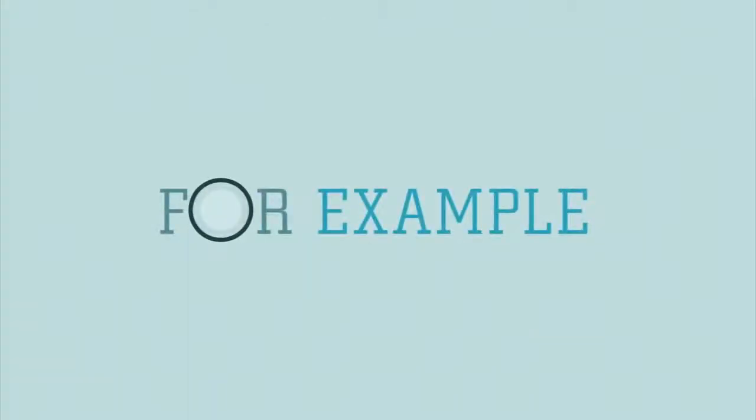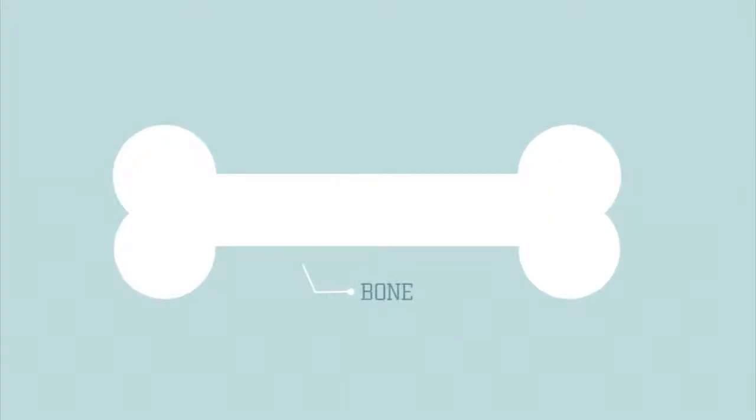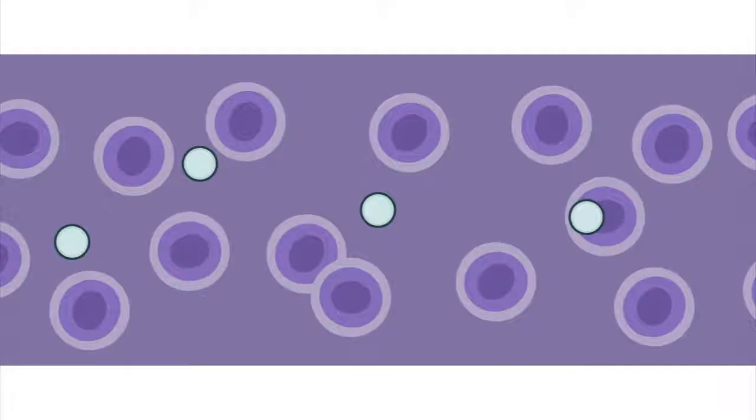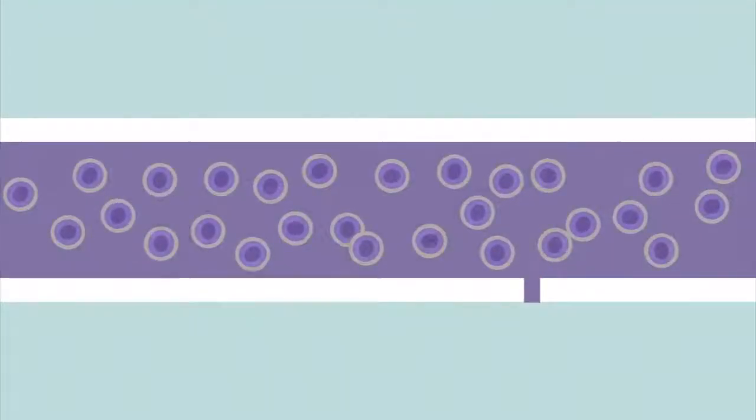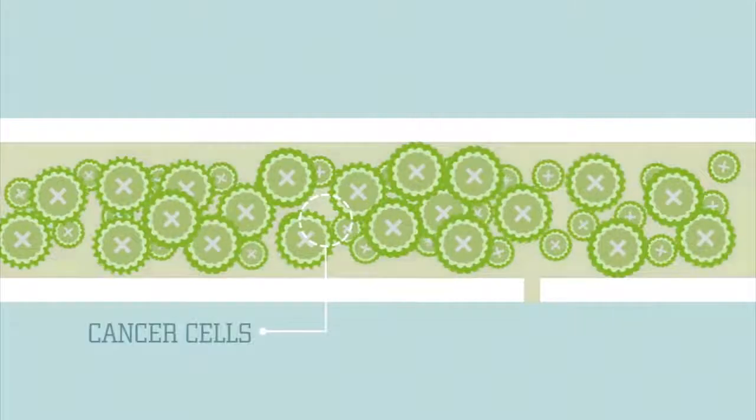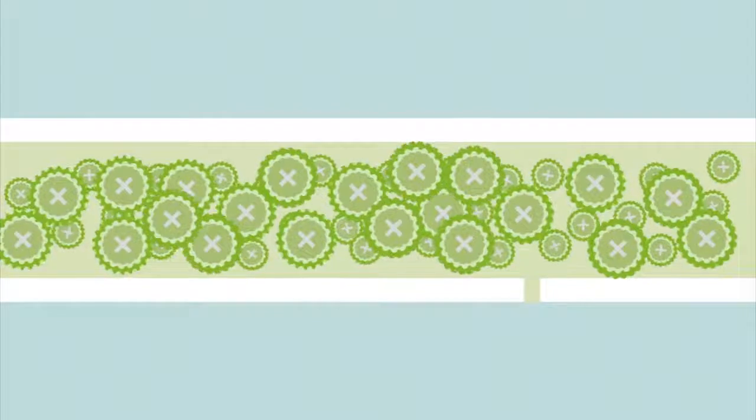For example, scientists currently use stem cells to treat patients with blood diseases such as leukemia. Leukemia is a form of cancer that affects your bone marrow. Bone marrow is the spongy tissue inside your bones where your blood cells are created. In leukemia, some of the cells inside your bone marrow grow uncontrollably, crowding out the healthy stem cells that form your blood cells.